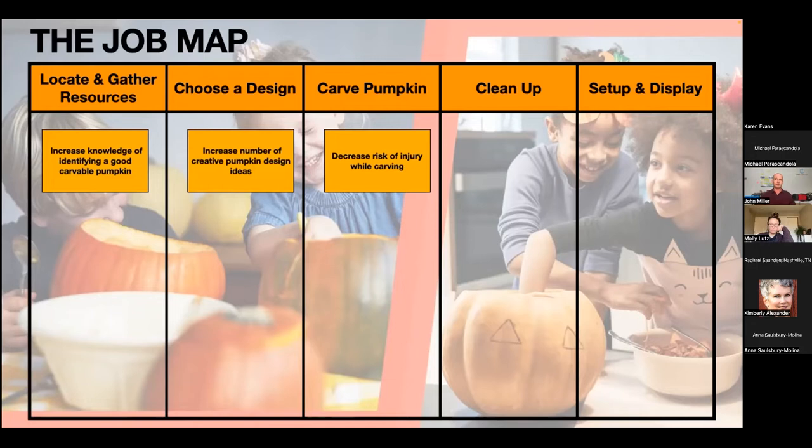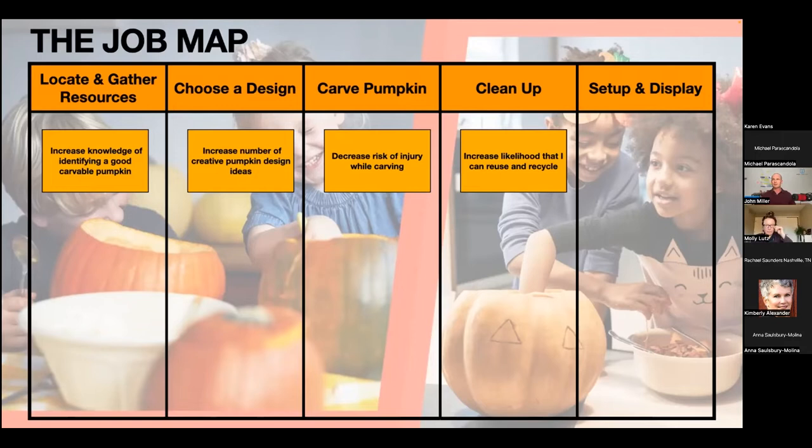They're not going to come out and say 'I want to decrease the risk of injury while carving a pumpkin.' They'll say, 'It really freaks me out when I give my kid a knife.' And you say, 'So would you say decreasing the risk of injury while carving is important to you?' 'Yeah, that's really important.' Or you might observe them really struggling and spending a lot of time trying to find a pumpkin design, and then you write those into what we call desired outcome statements.